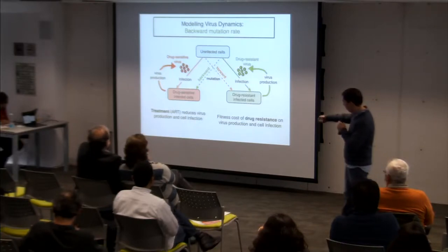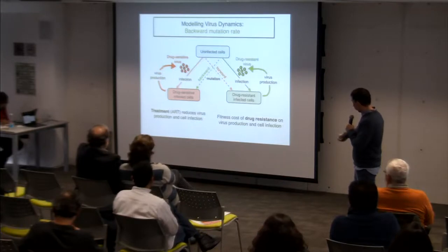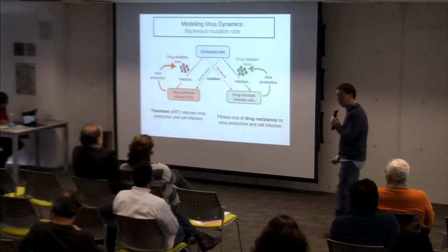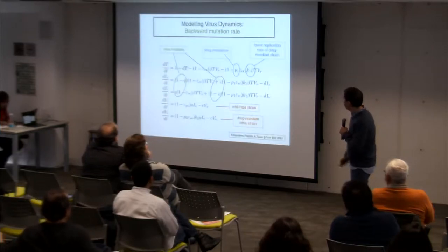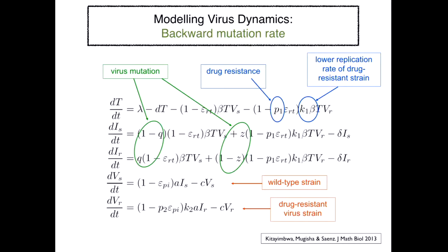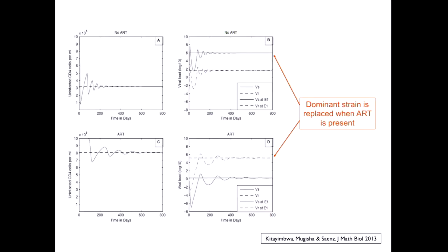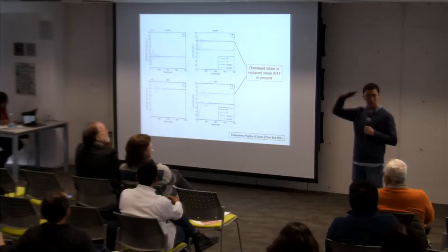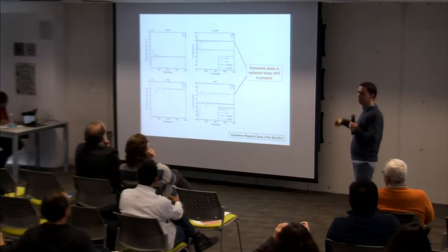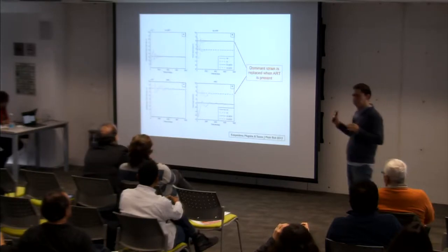The model is simple — we add the backward mutation rate, consider treatment as most authors do, and consider a fitness cost because of drug resistance. The model shows, as expected, that the dominant strain is replaced when antiretroviral therapy is present. If there is no ART, the drug sensitive virus is dominant. But if ART is present, the drug resistant strain becomes dominant. These are very expectable results.